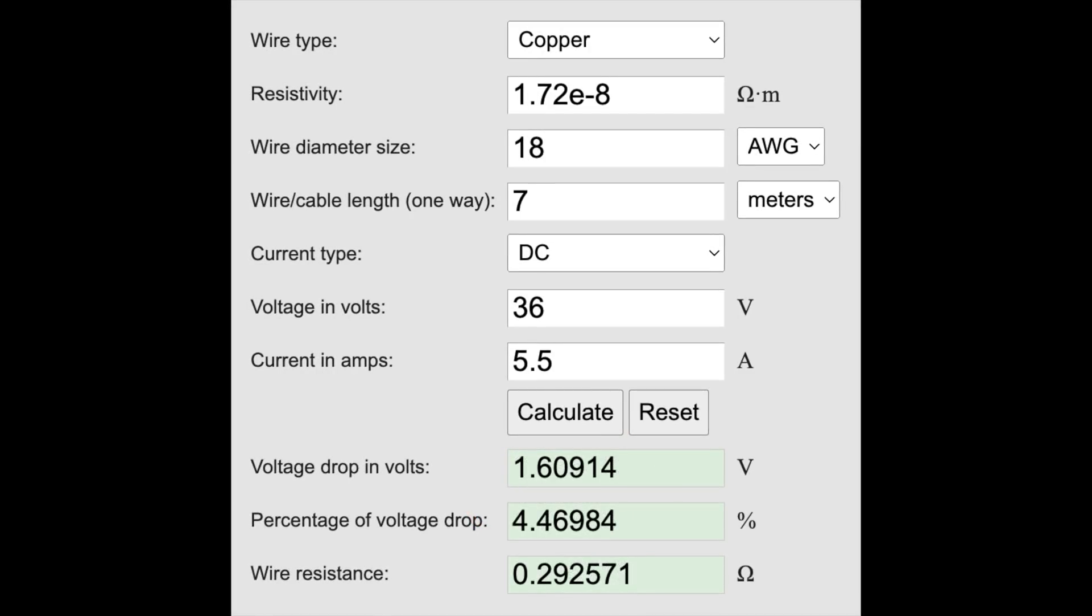Here's what I erroneously used initially, the thinner 18 gauge. Over 7 meters, the voltage drop is 1.6 volts, which is 4.5%, and the reason for the terrible performance.